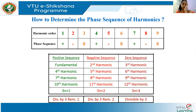In tabular form: 1 is positive, 2 is negative, 3 is zero; then 4 positive, 5 negative, 6 zero, etc. All positive sequence harmonics are 1st, 4th, 7th, 10th (3k+1). Negative sequence are 2nd, 5th, 8th, 11th (3k+2). Zero sequence are 3rd, 6th, 9th — all multiples of 3.